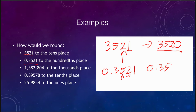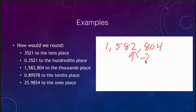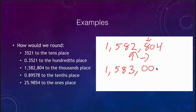The next example: we want to round 1,582,804 to the thousands place. We look at the number to the right of the thousands digit, which is an eight. Because that is greater than four, we need to increase the rounding digit. So we take 1, 5, 8 and increase the two by one to a three. Because these remaining digits are to the left of the decimal point, we add placeholder zeros. Rounding 1,582,804 to the thousands place gives us 1,583,000.